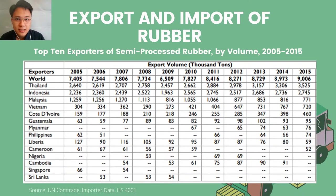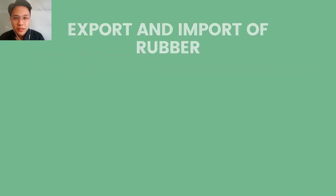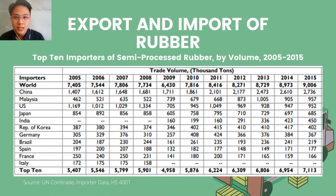The top 10 exporters of semi-processed rubber for the years 2005 to 2015 show that the top three exporters are Thailand, Indonesia, and Malaysia. The top 10 importers of semi-processed rubber for the same period show that the top three importers are China, Malaysia, and the United States.